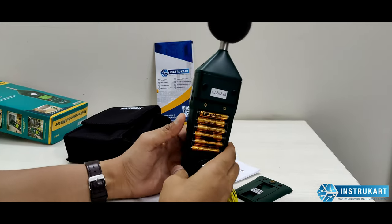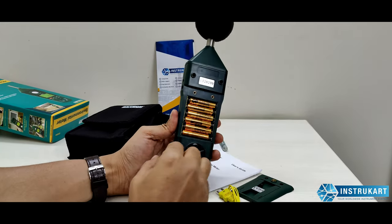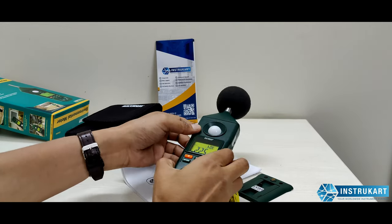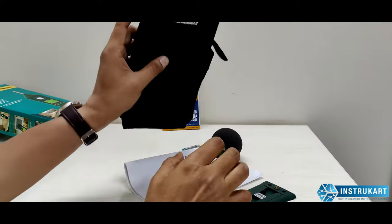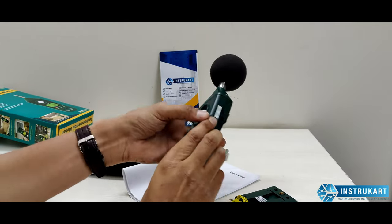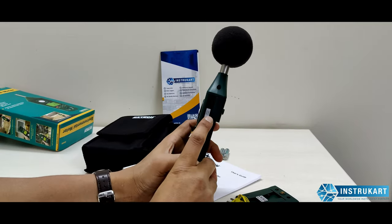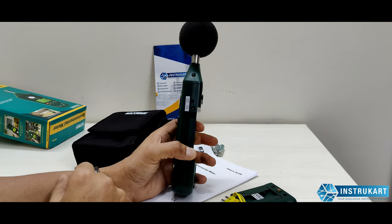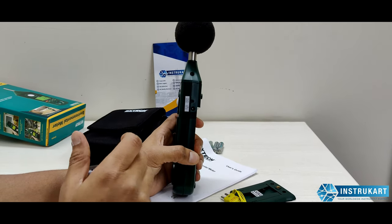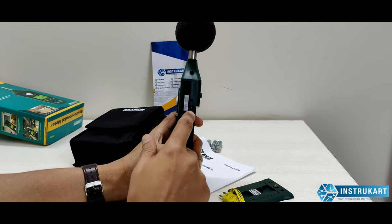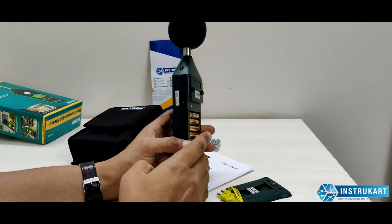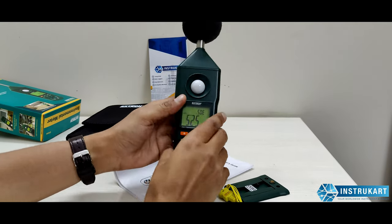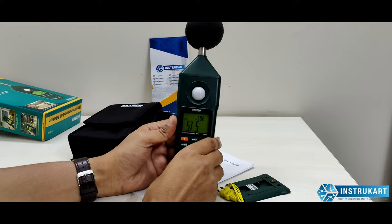At the back, you can see it runs on six AA size batteries and comes with a carrying pouch. On the left side, there's an RS232 output for data connection, and if batteries are not available, you can use an adapter which is additionally available.